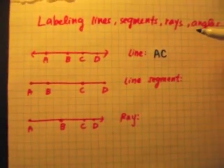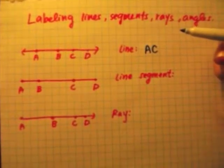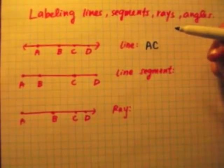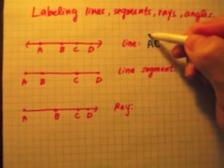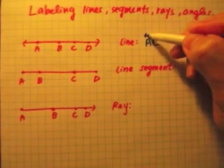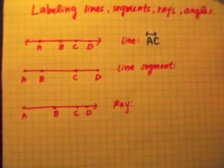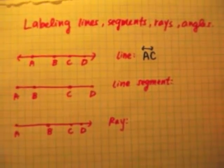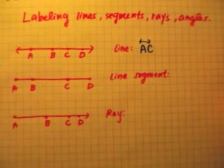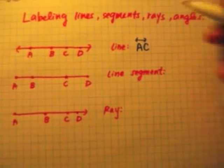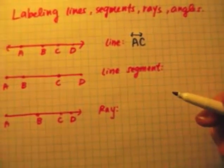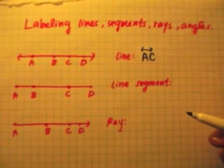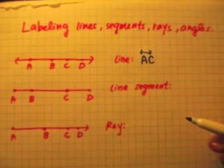Now to finish this label, I need to make sure I include the little arrows on top — there you go, the mini line right on top. Please do not forget to write that. Now when it comes to the line segment, it becomes a little bit more tricky.